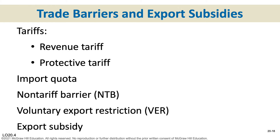That assumes free trade. If we have trade restrictions, the world price will potentially have a tariff added to it. A tariff is a tax on an imported good. All tariffs raise revenue for the federal government. Some tariffs are intended to be protective — it can only be a protective tariff if we produce that good domestically. If we don't produce it domestically, it's a revenue tariff. All tariffs raise revenue; tariffs are simply taxes on imported goods.